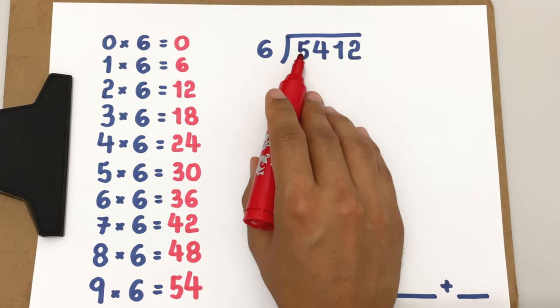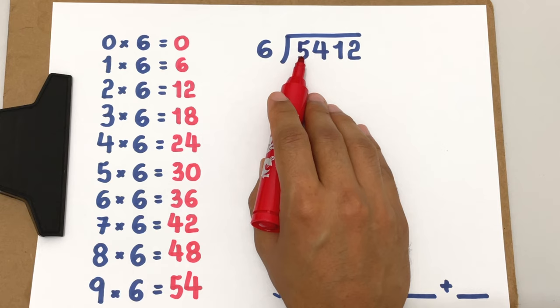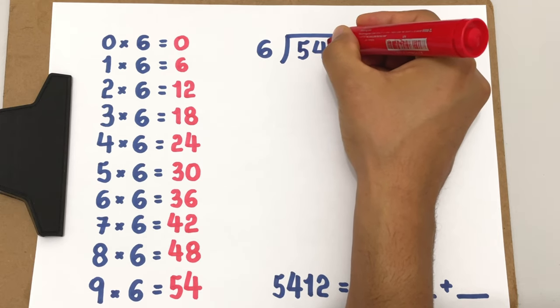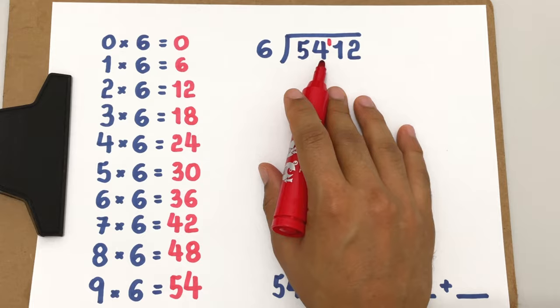I start by looking at this first digit here. Since 5 is less than 6, I do not start yet. I group it with the next digit. Now we have here 54. 54 is more than 6 and then I start by asking the question.